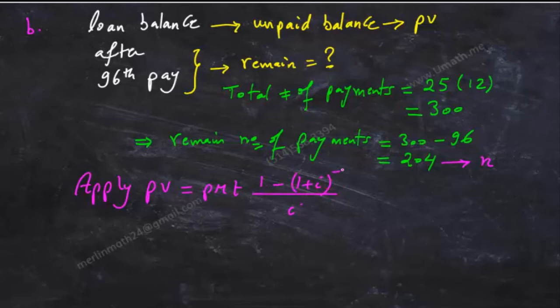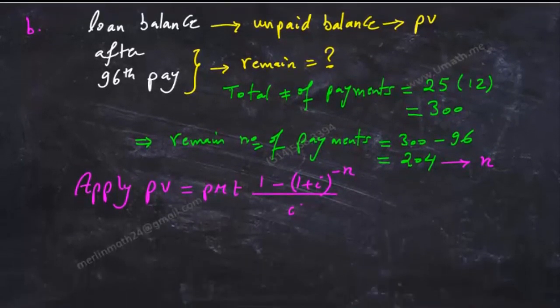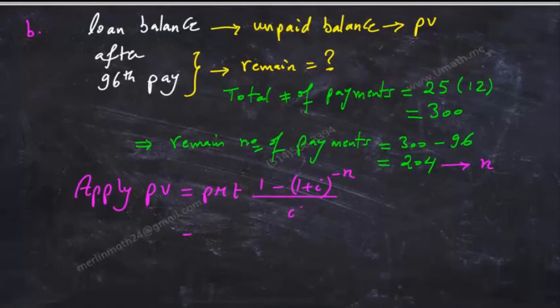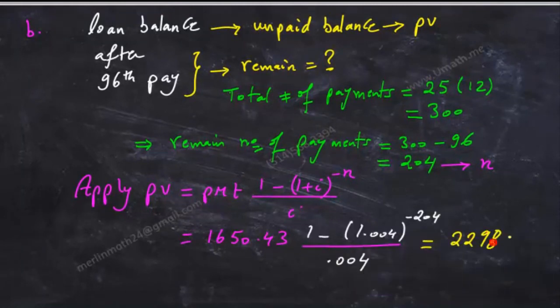So we take the same value of pmt in part a which is $1650.43, use calculator, and you will get the pv to be $229,856.52.